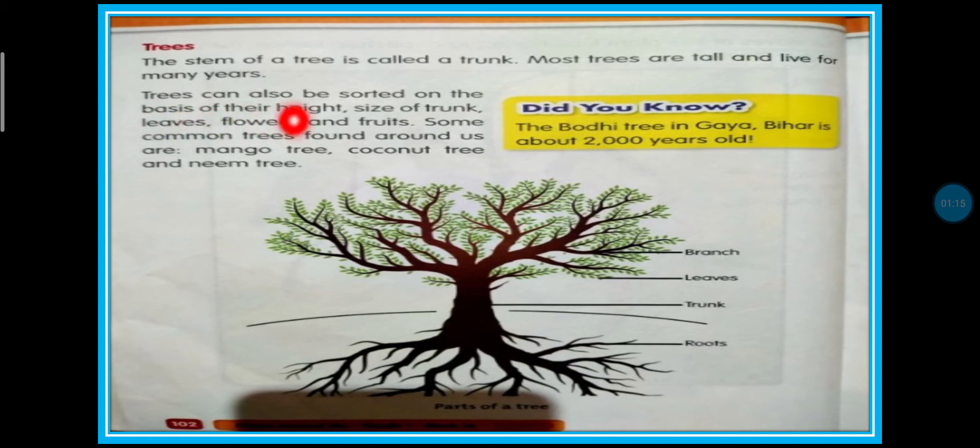Trees can also be sorted on the basis of their height, size of trunk, leaves, flowers and fruits. Tree ko hum kaise pehchan sakte hai? Unki height ko dekhkar, unki trunk ko dekhkar, unki leaves ko dekhkar, unki flowers or fruits ko dekhkar hum pehchan sakte hai.